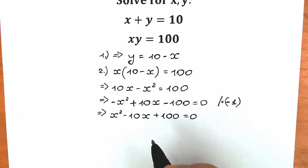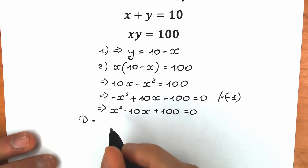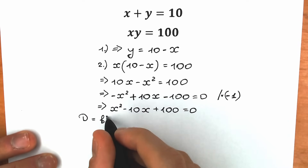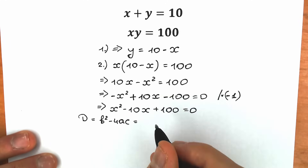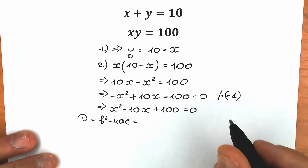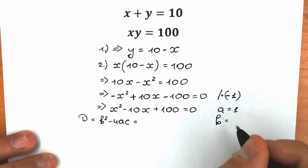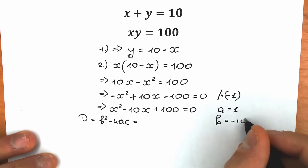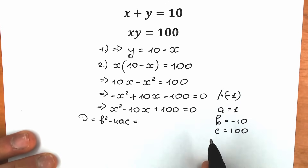This is a basic quadratic equation. Let's find the discriminant using the formula D equals b squared minus 4ac. Plugging in: a equals 1, b equals minus 10, and c equals 100.